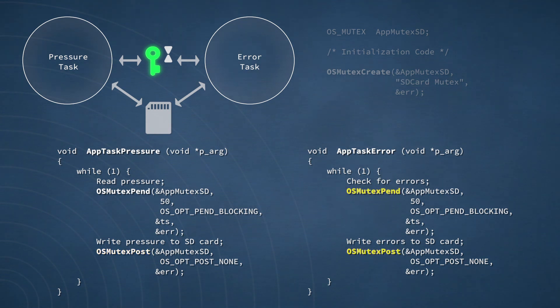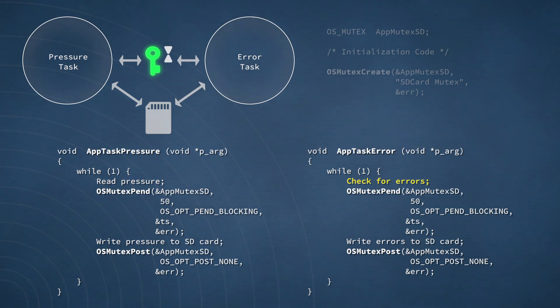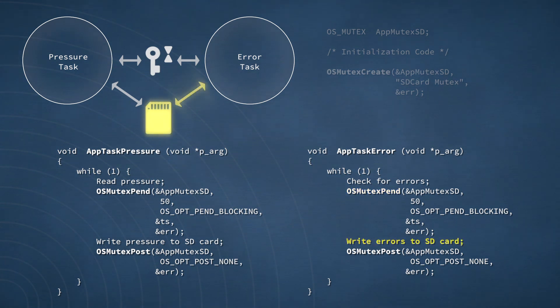The error task, for its part, gains access to the SD card via pend and post calls that are practically identical to those we've just seen. The task begins by checking for error conditions. After doing so, the error task pends on the mutex to gain exclusive access to the SD card. It writes the error conditions to the card and then posts the mutex to make the card available again. Of course, the pseudocode here is fairly simplistic. In a real application, both the error task and the pressure task would need to incorporate time delay calls or some other mechanism for yielding the CPU.